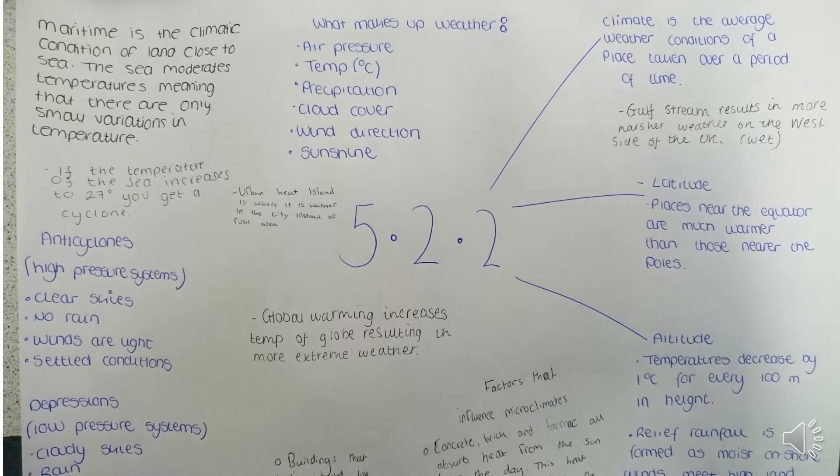One of the big impacts on climate is latitude — the distance from the equator, those parallel lines on a globe or map. There are two reasons why it gets colder the further north or south you go. Firstly, the sun's energy has to travel through more atmosphere, and it is absorbed by dust and water vapour along the way, so by the time it reaches the ground, some energy has already been lost.